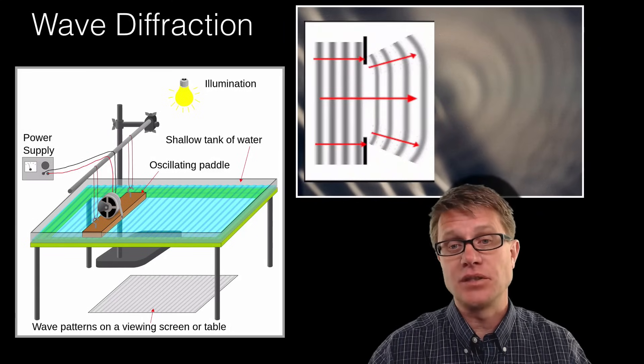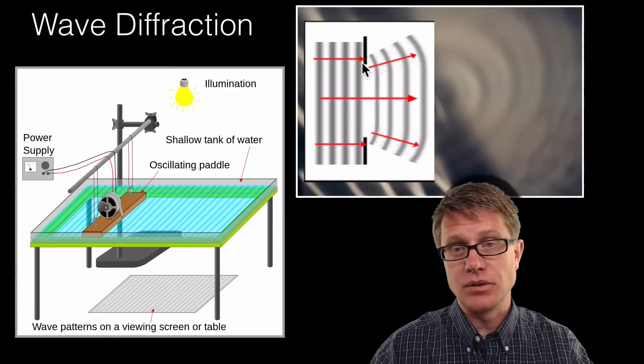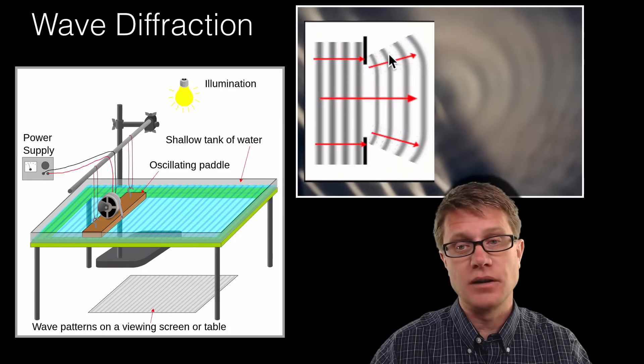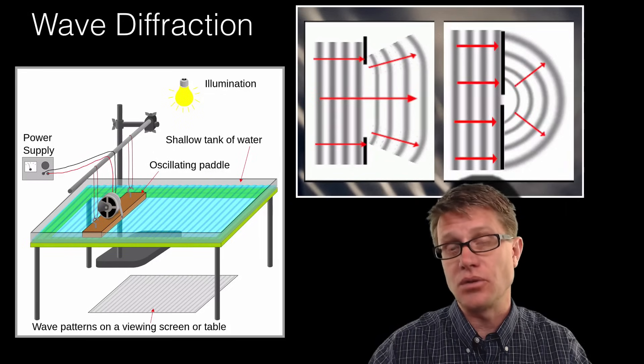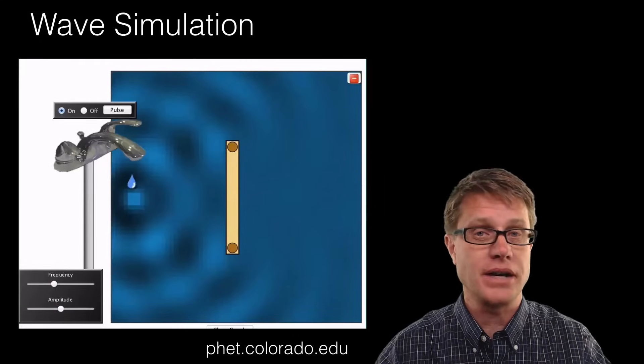Now the size of that gap is important. If you have got a gap that is really large in relation to the wavelength, small diffraction. But if we decrease it to around the size of the wavelength then we are going to get true diffraction.